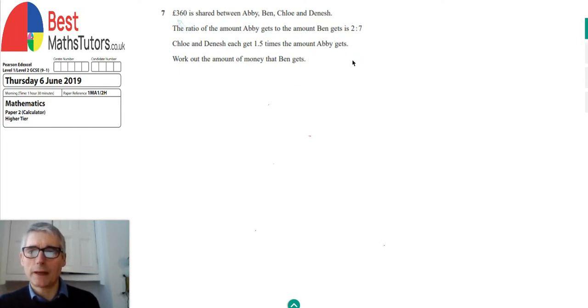So we're told that £360 is shared between four people, Abby, Ben, Chloe and Dinesh, which we'll call A, B, C and D. And we're given that the ratio of the amount Abby gets to the amount Ben gets, A to B, is equal to 2 to 7. And we're told that Chloe and Dinesh get 1.5 times the amount that Abby gets. We're not actually given the ratio that they get, so we're not given the ratio of C to A or the ratio of D to A, which we could do with finding.